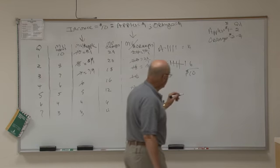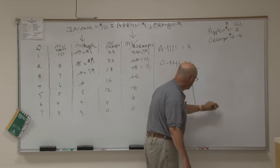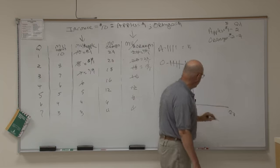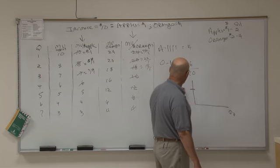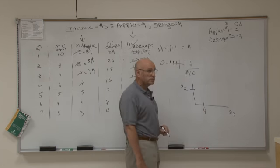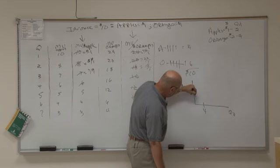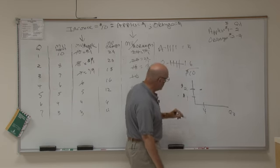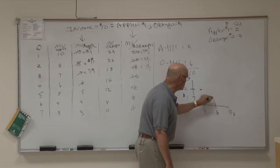And if we want to take a look at this to the next step, we have the quantity of oranges down here. When oranges were $2 an orange, I bought four oranges. When the price of oranges went to $1 an orange, I purchased six oranges.